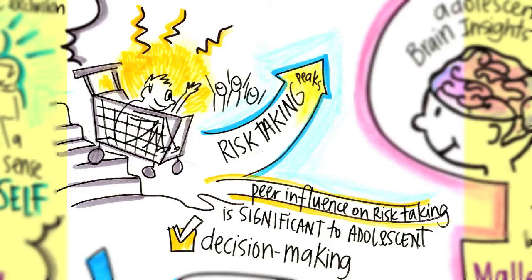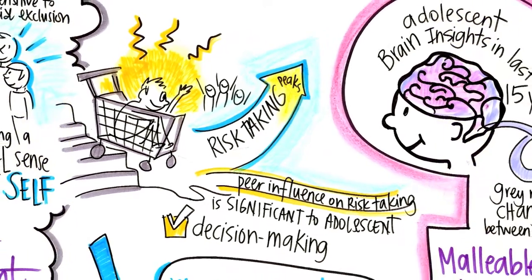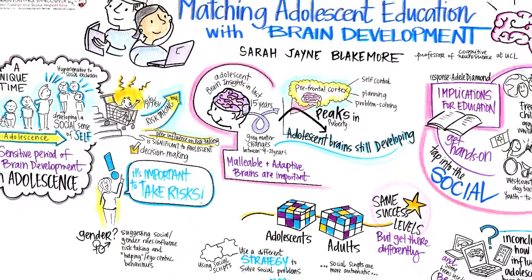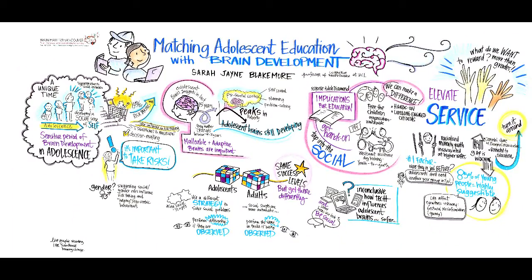Risk taking and social influence are often maligned as bad adolescent behaviors, but our take is that they are adaptive and important. Where would we be if we never took risks? Adolescence is a period of life where you need to become independent from your family, affiliate with peers, and explore your environment. These are probably really adaptive behaviors that exist for a very good reason and are essential for becoming adults. We need to harness the adolescent's natural propensity to take risks and foster it in settings like the classroom.